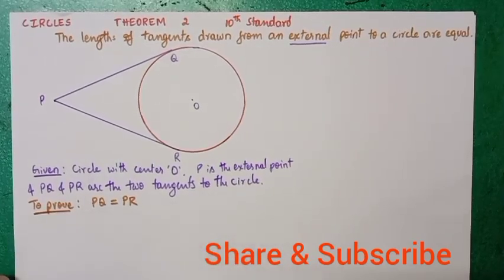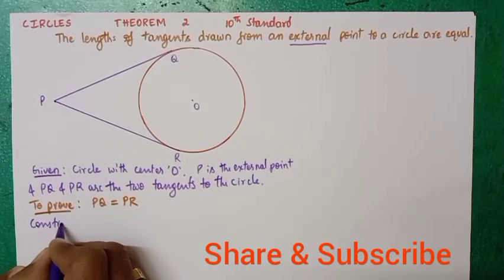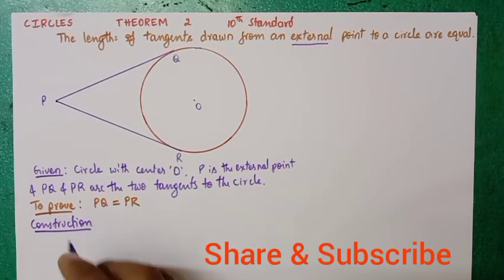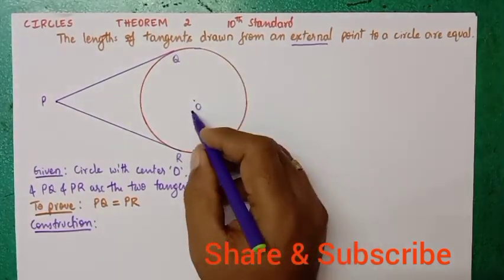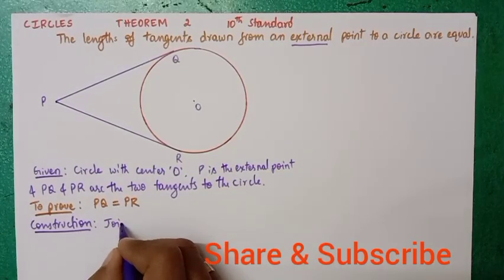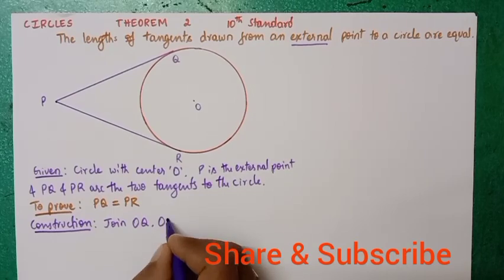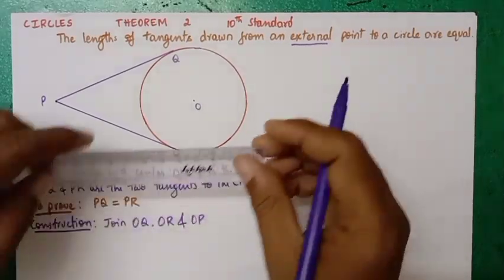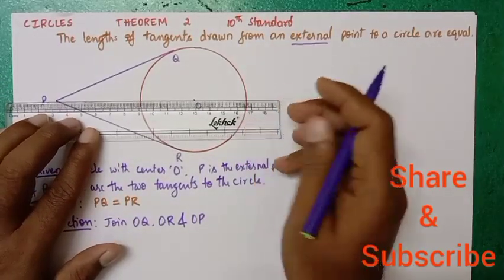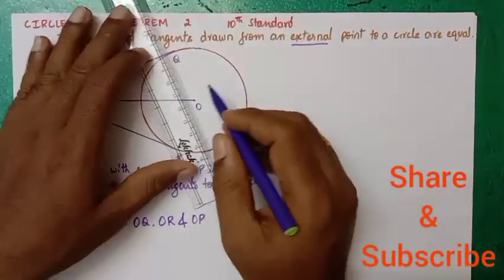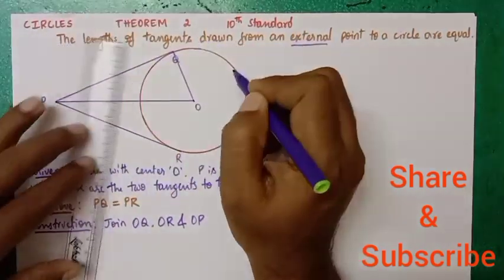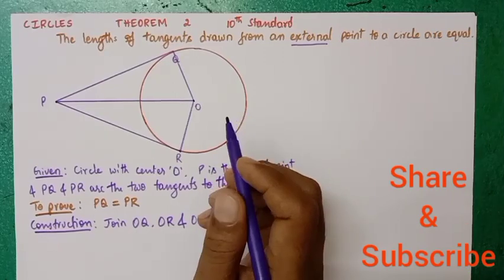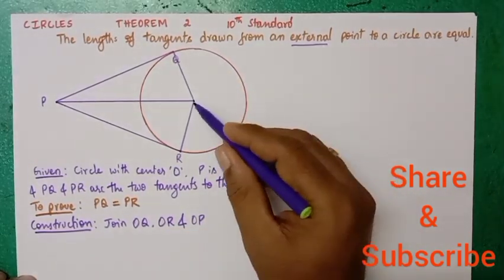We need to make some construction to facilitate our proof. What I am going to do is draw lines joining OQ, OR, and OP. This will give us two triangles, which helps us prove that the two tangents are equal. Construction: join OQ, OR, and OP.